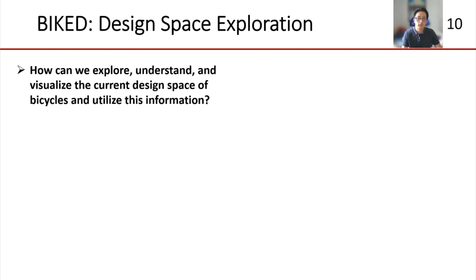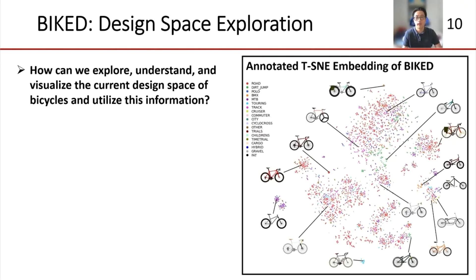The next research question I'd like to address is: how can we explore, understand, and visualize the current design space of bicycles and utilize this information? If you're a designer, understanding the design space you're working in is extremely valuable. We address this question using unsupervised embedding algorithms. This here is a two-dimensional t-distributed stochastic neighbor embedding of the dataset, with classes color-coded and select designs annotated. These embeddings are intrinsically valuable as a means to visualize the data, and by visualizing the relationships between different classes of bikes, designers can identify trends, patterns, and potential gaps in the design space.